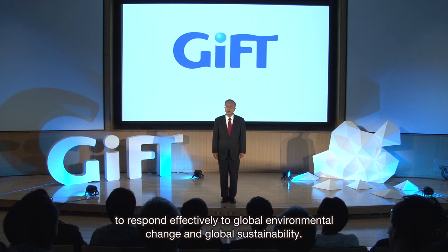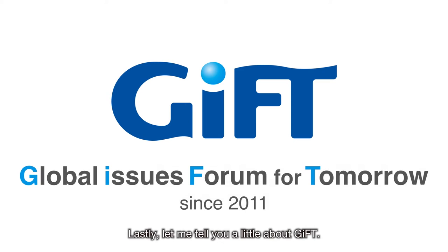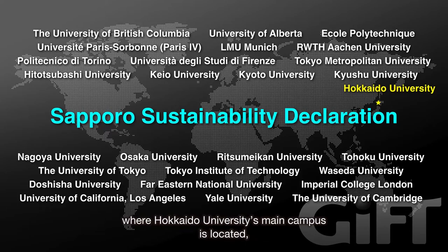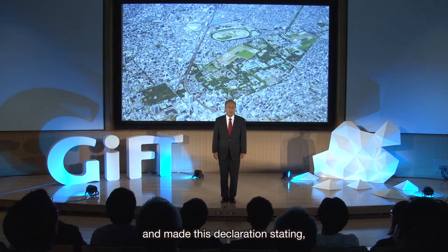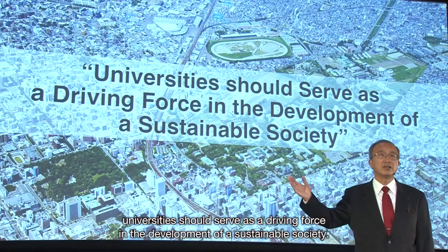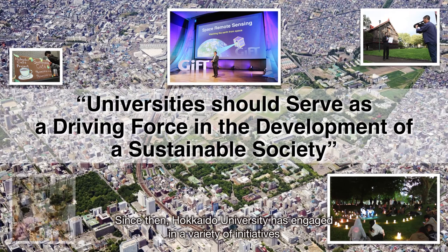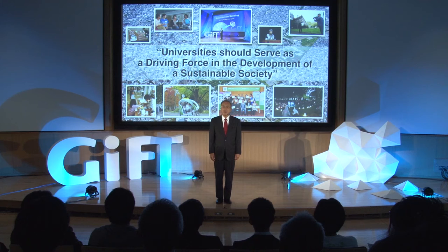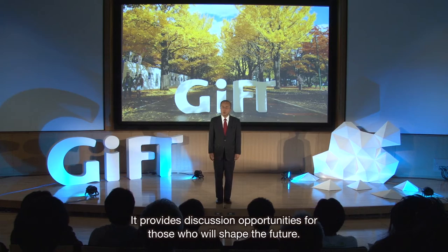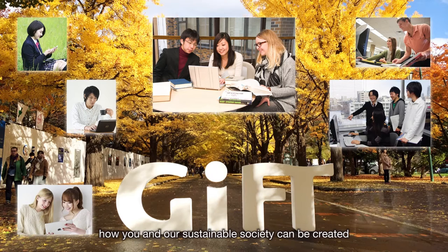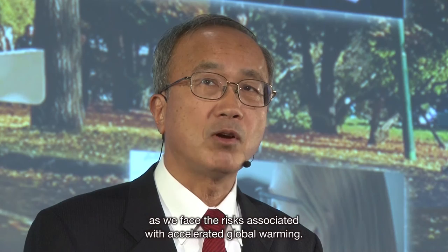Let me tell you a little about GIFT. The Sapporo Sustainability Declaration of 2008 was behind the birth of GIFT. Representatives of 27 major universities around the world gathered in Sapporo, where Hokkaido University's main campus is located, and made this declaration stating: universities should serve as a driving force in the development of a sustainable society. Since then, Hokkaido University has engaged in a variety of initiatives to help create a sustainable society. GIFT is one of these initiatives — it provides discussion opportunities for those who will shape the future. I invite all young people to join us and consider how a sustainable society can be created as we face the risks associated with accelerated global warming.